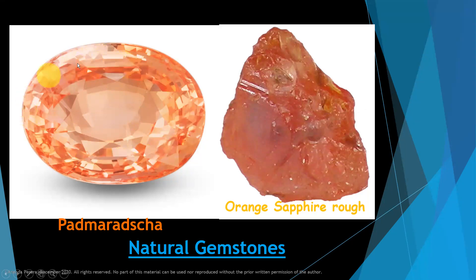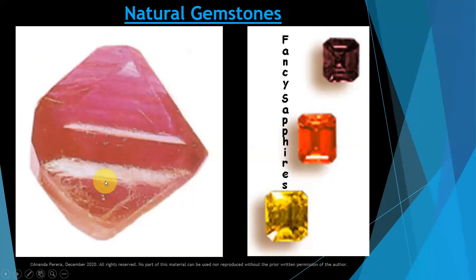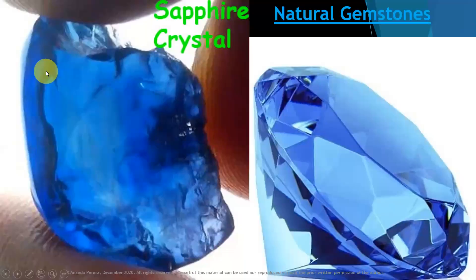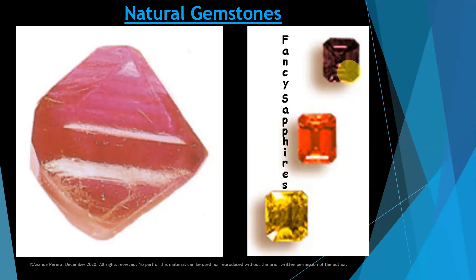Now this is Padmarag. These are low color, very light color fancy sapphires — like pastel. Pastel and fancy are both the same. Here is a natural ruby — see the difference from the synthetic one. These are fancy sapphires, but the color is a little more than fancy, meaning pastel color. There are many color gradings and we will learn those in the next lessons.